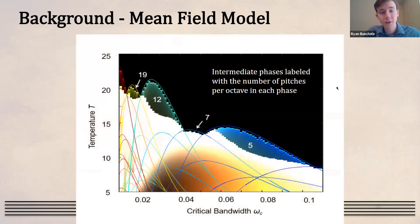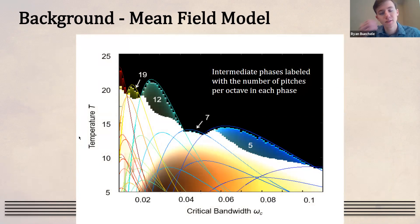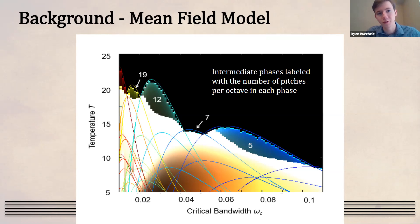We can construct a phase diagram of this system with critical bandwidth on the x-axis and temperature on the y-axis. There's a high-temperature disordered phase in black, a low-temperature ordered phase in white, and intermediate phases labeled with the number of pitches — corresponding to the band of equally spaced pitches seen before. The number labels how many pitches appear in that given phase.